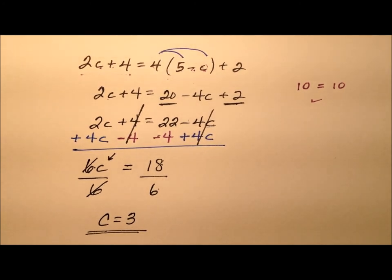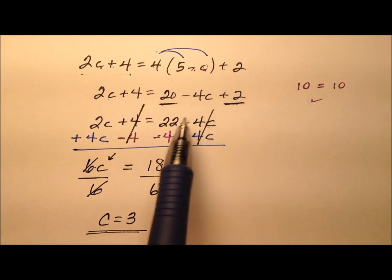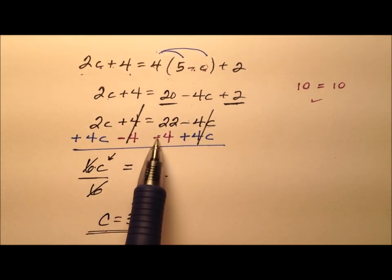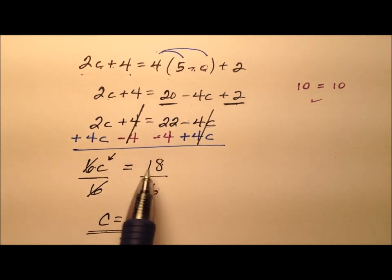So to recap, we use the distributive property first, and then combine any like terms that we had on this right side. Then we use the addition and the subtraction properties of equality to get our variables on one side and our constants on the other. And then we finished up by dividing both sides by 6 using that division property of equality, and we saw that the value for our variable c is going to be 3.